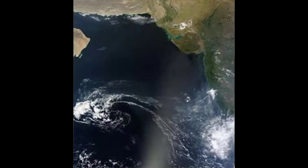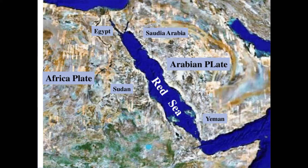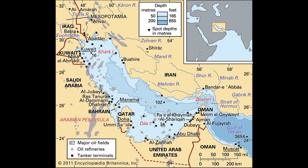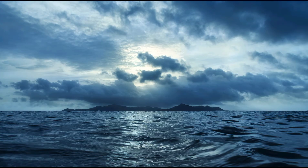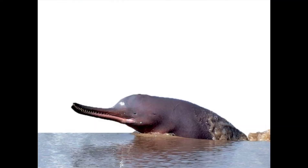Its total area is 3,862,000 square kilometers and its maximum depth is 4,652 meters. The Arabian Sea's surface area is about 3,862,000 km, and the maximum width of the sea is approximately 2,400 km.